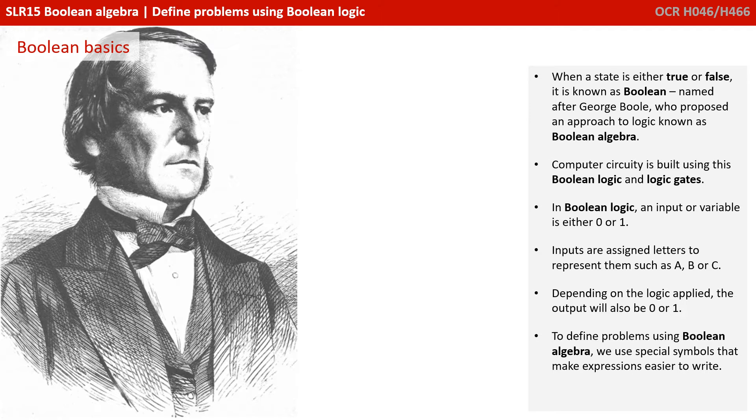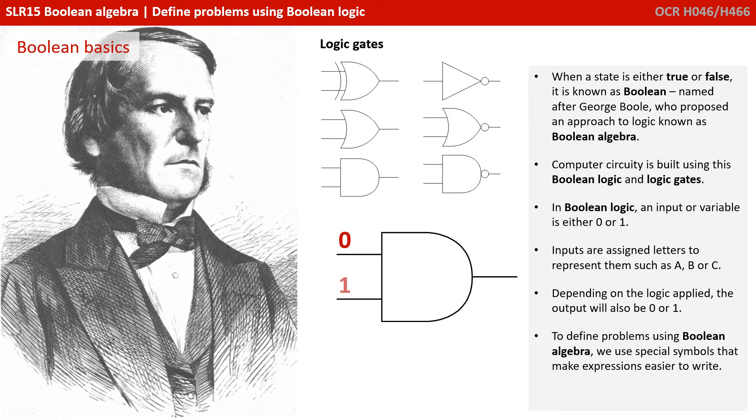When a state is either true or false, it's known as Boolean, named after George Boole, who proposed an approach to logic known as Boolean algebra. Computer circuitry is built using this Boolean logic and logic gates. In Boolean logic, an input or variable is either 0 or 1. Inputs are assigned letters to represent them, such as A, B or C. Depending on the logic applied, the output will also be 0 or 1.